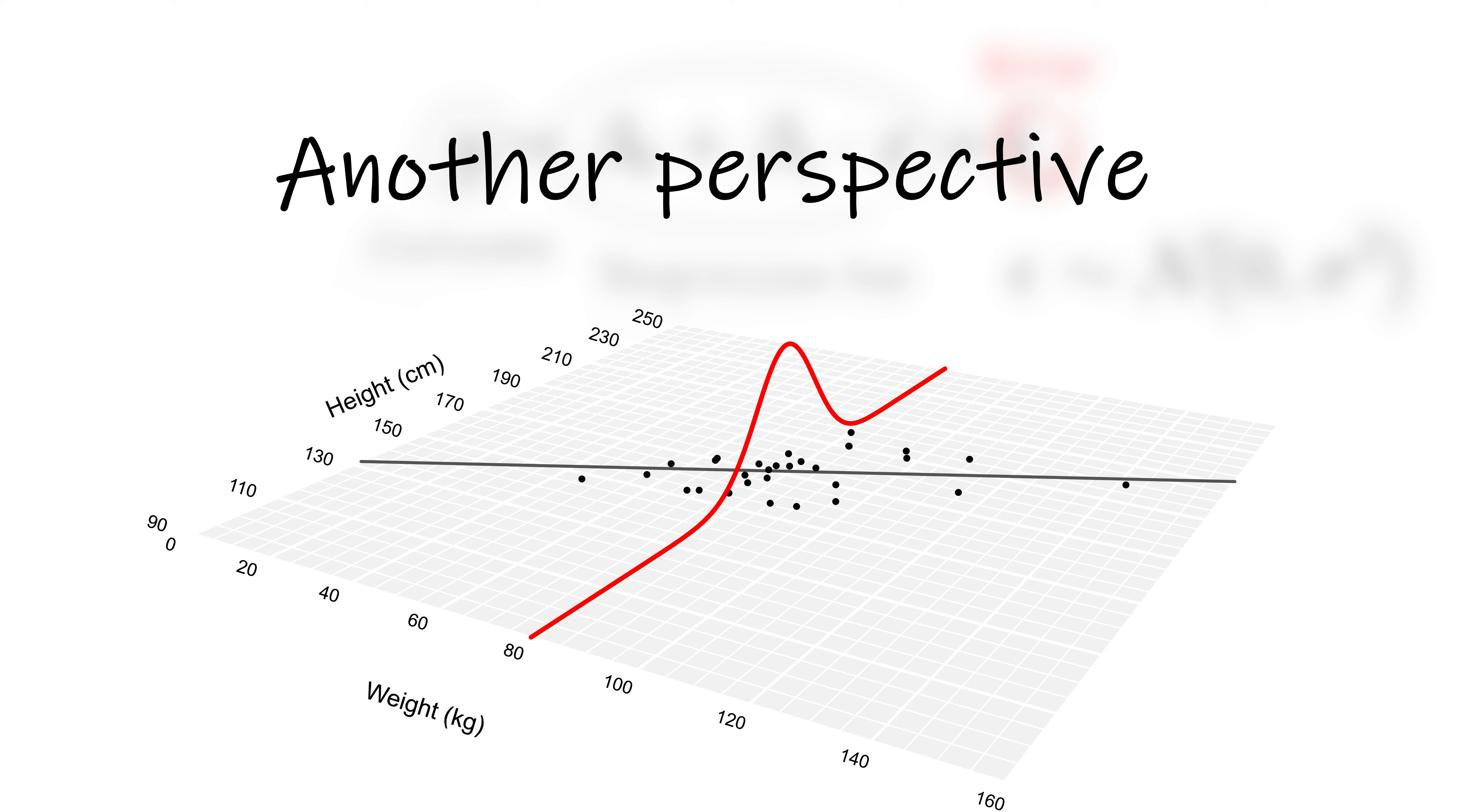However, there is another correct way to interpret simple linear regression. Instead of saying the prediction is a line and the remainder a 0 mean normal distribution, we can also say that the prediction is a normal distribution with mean equal to the line.